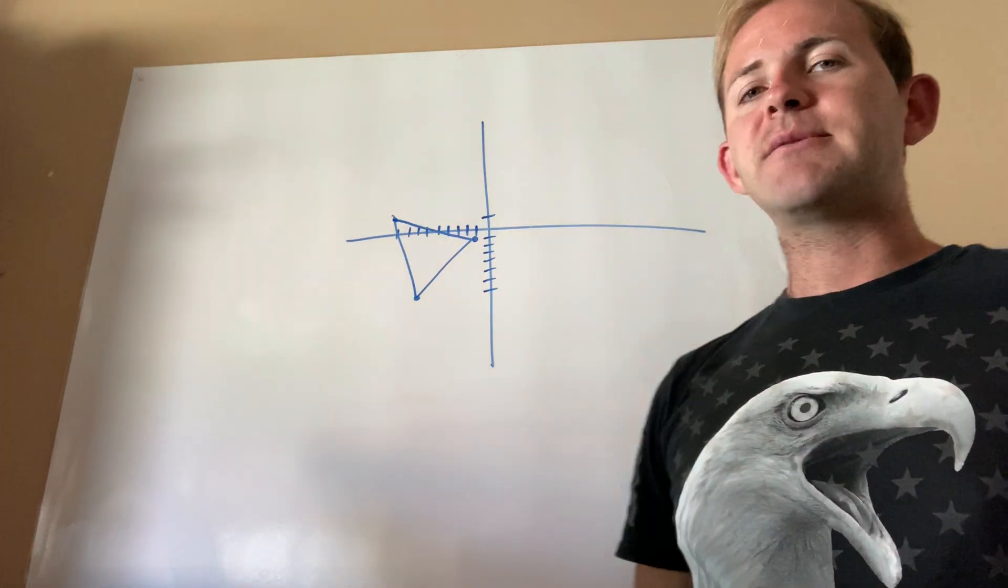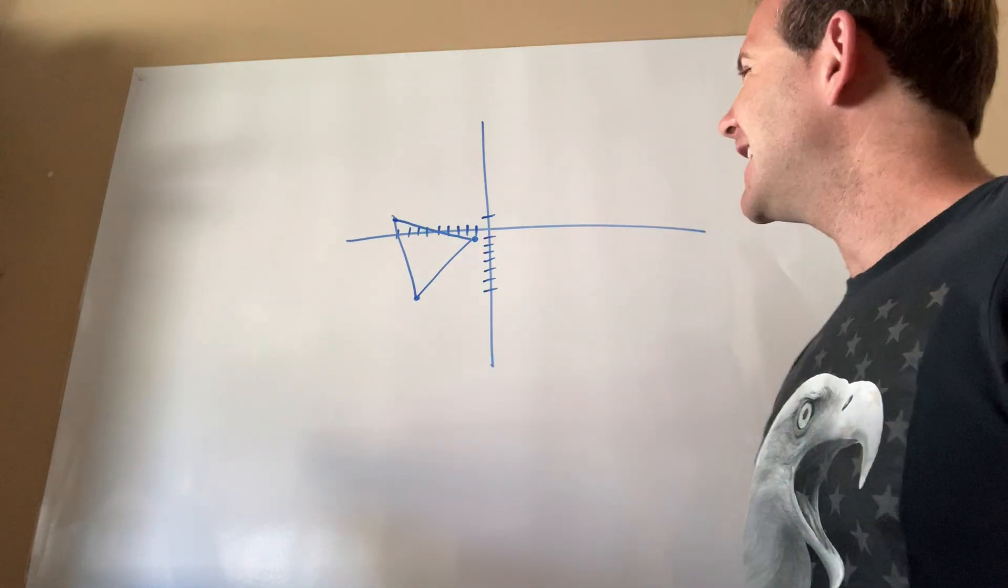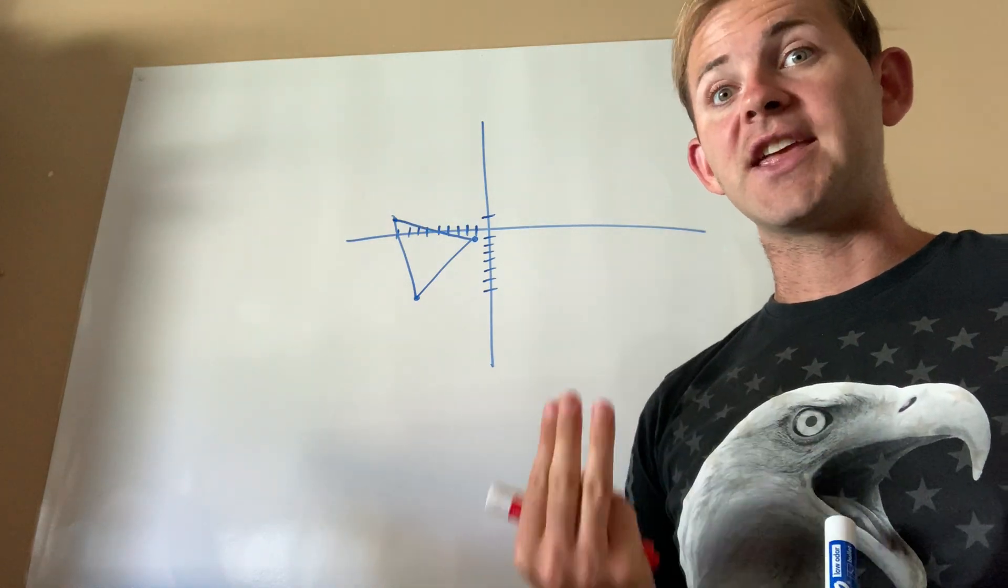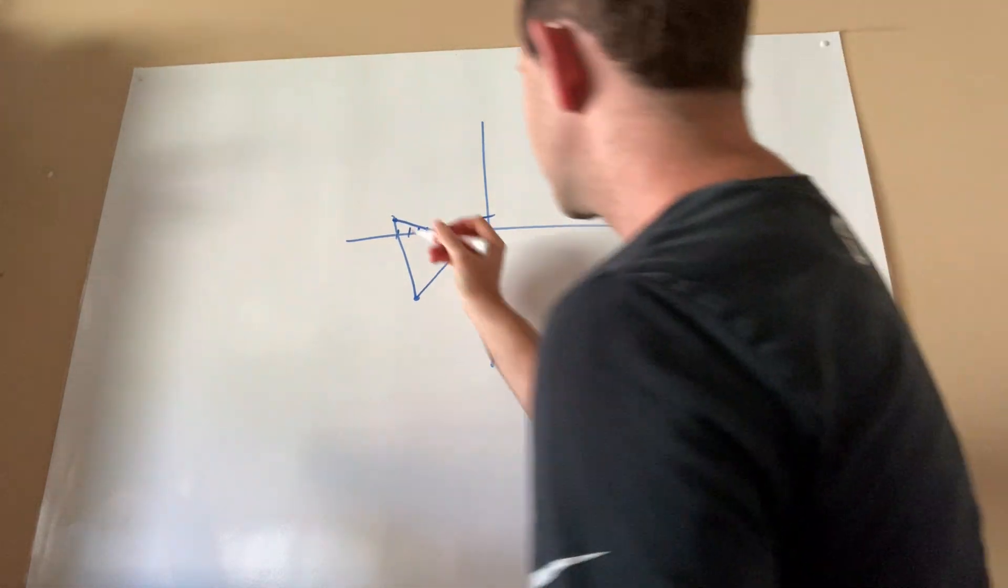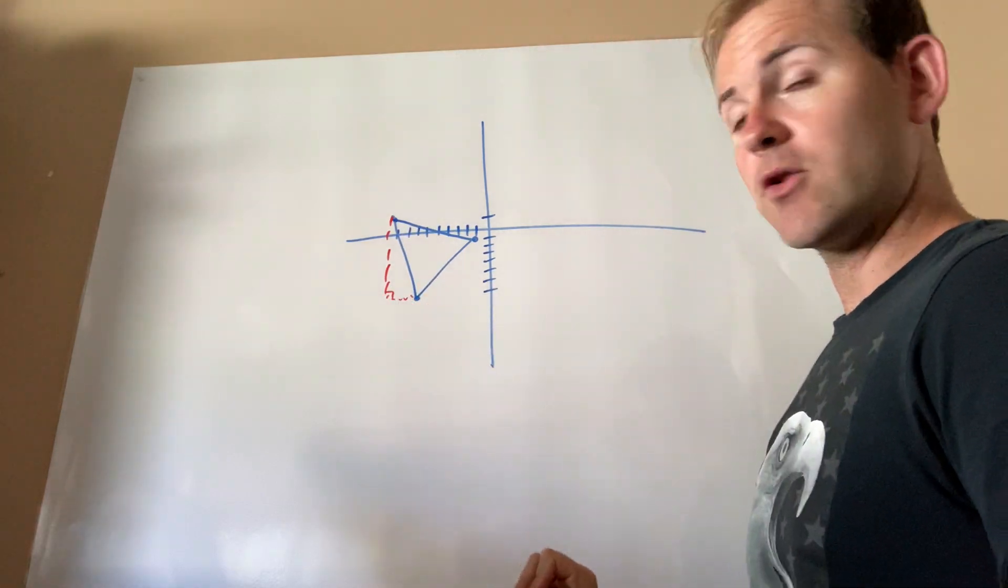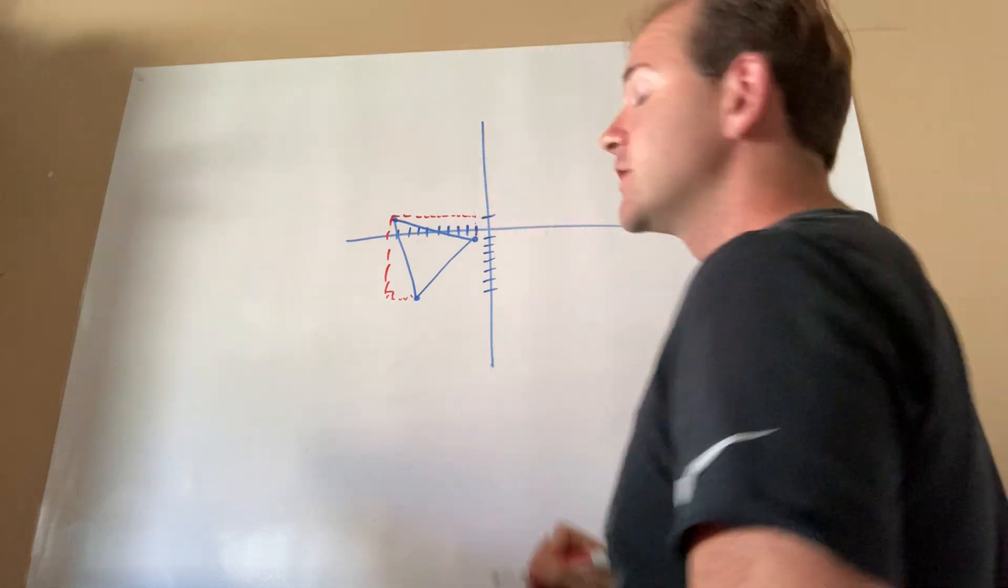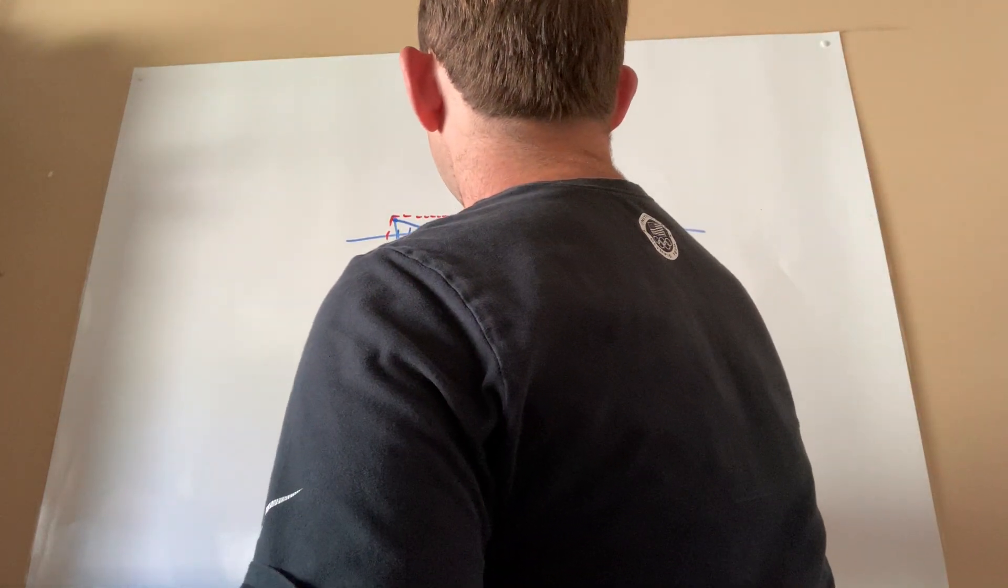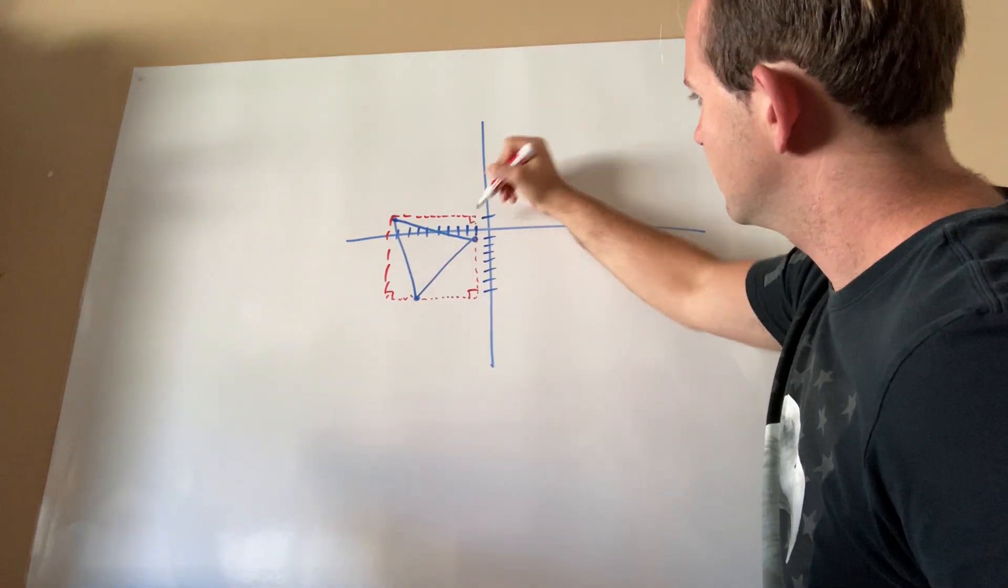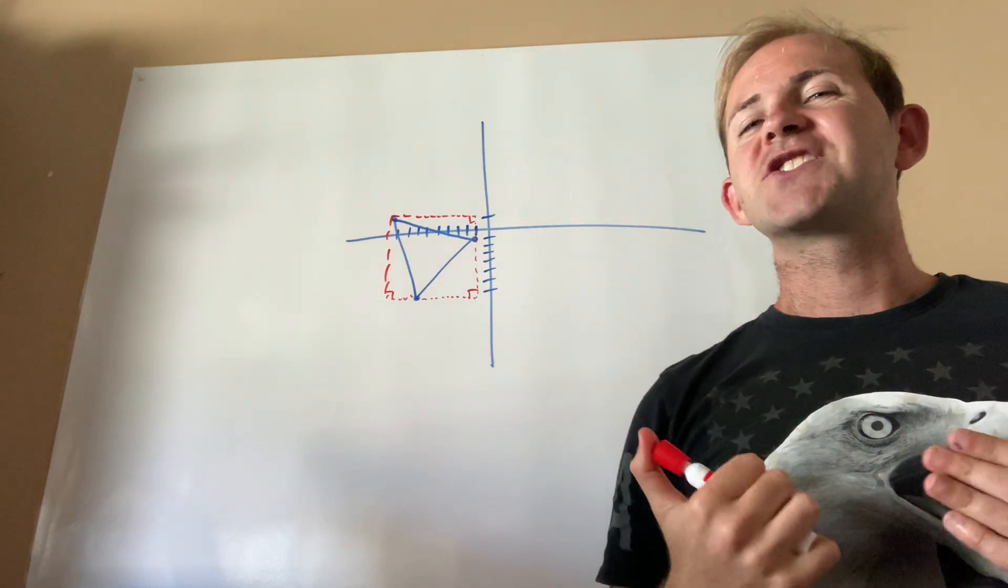All right guys, so thus far we have successfully, I hope, graphed our triangle in the xy coordinate plane, but in order to be able to determine if it's scalene, isosceles, or equilateral, we need to be able to draw our right triangles in the corners and then use the Pythagorean theorem three times. So let's do that now. There's one triangle.